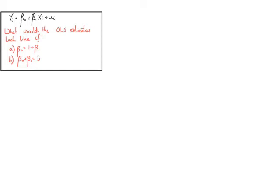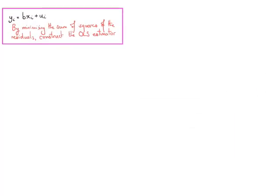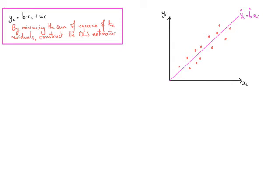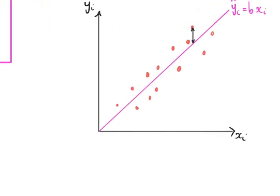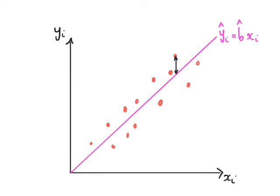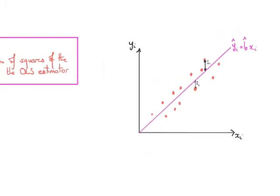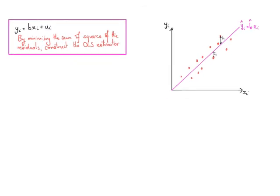Before we do that, let's consider a linked example. If we wish to estimate the relationship between two economic variables and we impose that the intercept is equal to zero, we're effectively drawing a straight line through our data — a line of best fit where we're minimizing the sum of squares of the residuals, the sum of squares of the û hats, but by imposing that the line goes through the intercept.